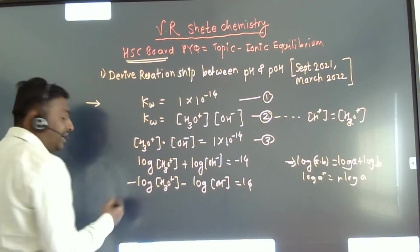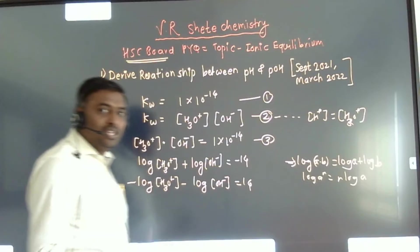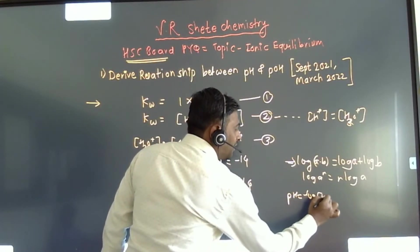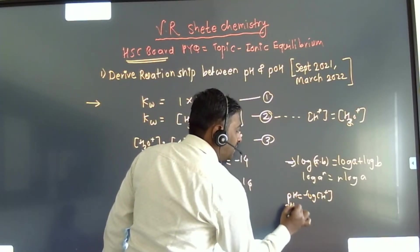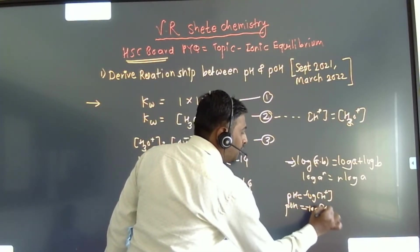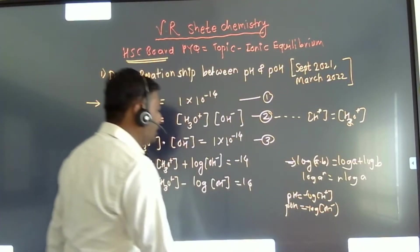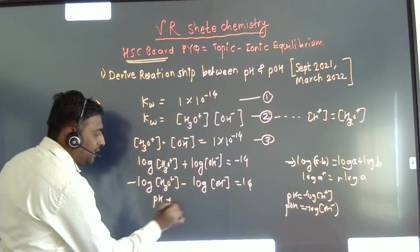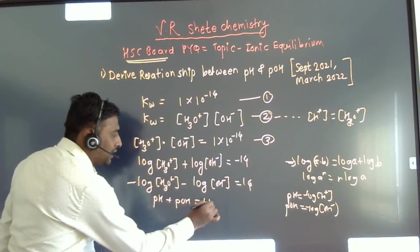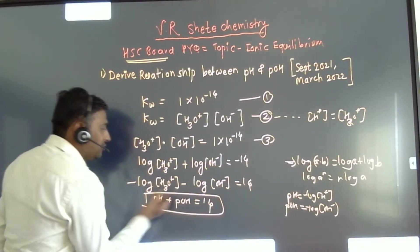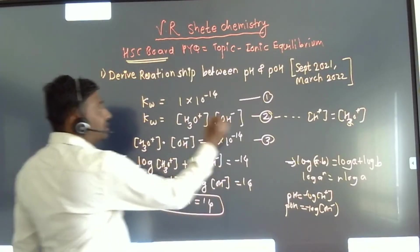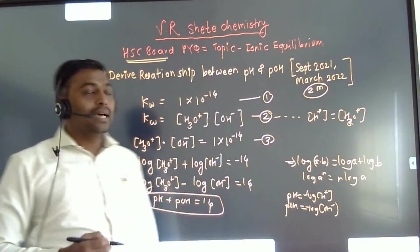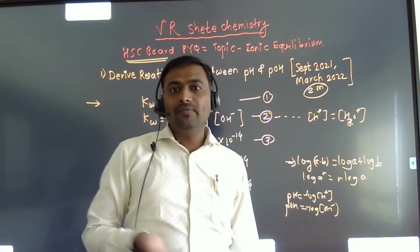By the definitions of pH and pOH — pH = −log[H⁺] and pOH = −log[OH⁻] — substituting into the equation gives us: pH + pOH = 14. This result carries 2 marks and was asked in the HSC board examination in September 2021 and March 2022.